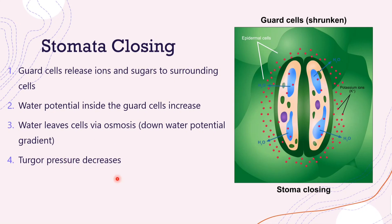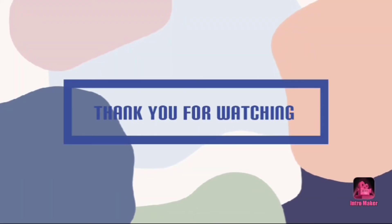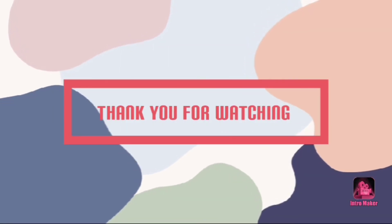As water leaves the guard cells, the turgor pressure decreases, making the guard cells become flaccid — limp — and this closes the stomatal pore. So: the guard cells release sugars and ions, causing the water potential in the guard cells to increase; water leaves via osmosis; the turgor pressure inside the guard cells decreases; the cells become flaccid; and the stomatal pore closes.